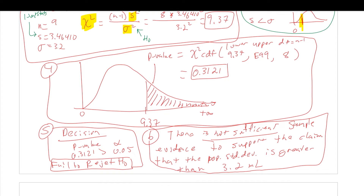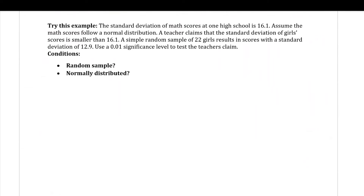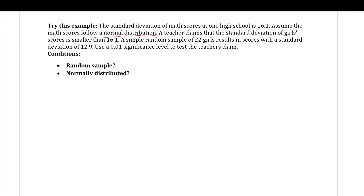Let's do another example. The standard deviation of math scores at one high school is 16.1. Assume the math scores follow a normal distribution. A teacher claims that the standard deviation of girls' scores is smaller than 16.1. A simple random sample of 22 girls results in scores with a standard deviation of 12.9. Use a 0.01 significance level to test the teacher's claim.